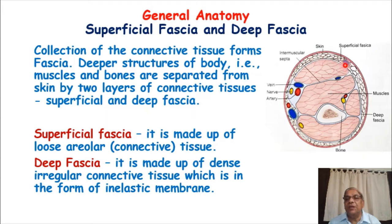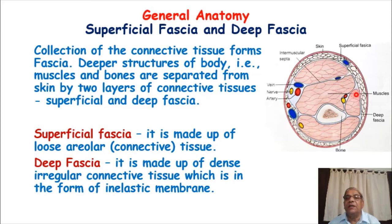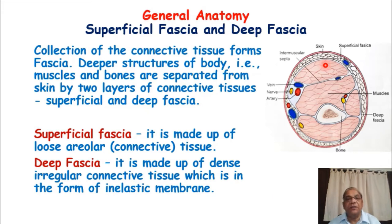As you must have seen, beneath the skin you can palpate the fat. There is a lot of fat present in certain regions of the body beneath the skin — that is the fat present in the superficial fascia. The deep fascia, after the superficial fascia, is a fibrous membrane just like thin paper, which is inelastic in nature. It is made up of dense irregular connective tissue. Just remember that the deep fascia is made up of dense irregular fibrous connective tissue in the form of a thin membrane, and it is inelastic — meaning you cannot stretch it, as it is made up of inelastic collagen fibers.